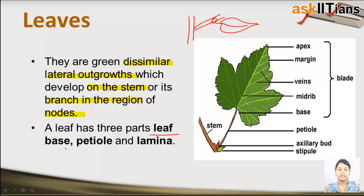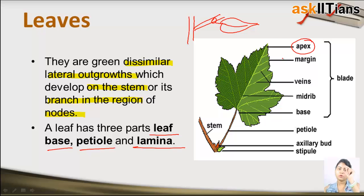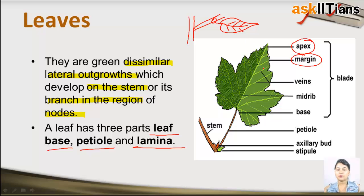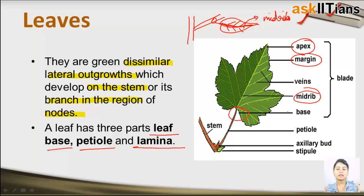A leaf has three parts: leaf base, petiole, and lamina. Looking at the diagram, the uppermost tip of the leaf is called the apex. The boundary of the leaf is known as the margin. Many veins are present inside a leaf, and the middle line that joins all the veins is known as the midrib. Midrib is visible in the diagram, along with the base of the leaf from where the leaf structure starts.